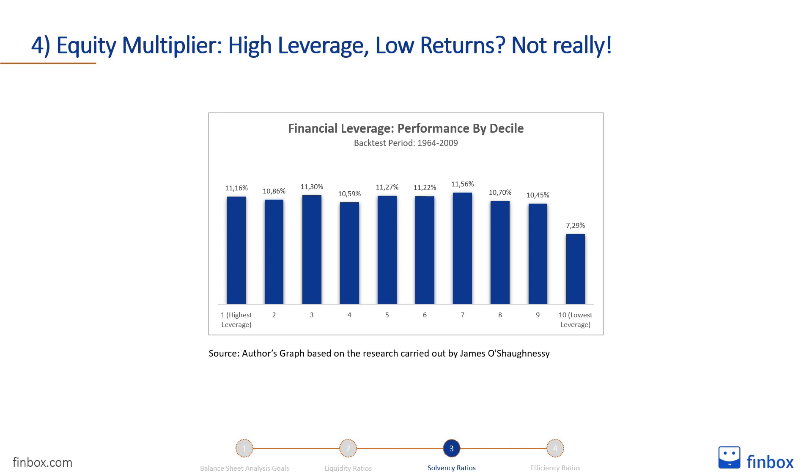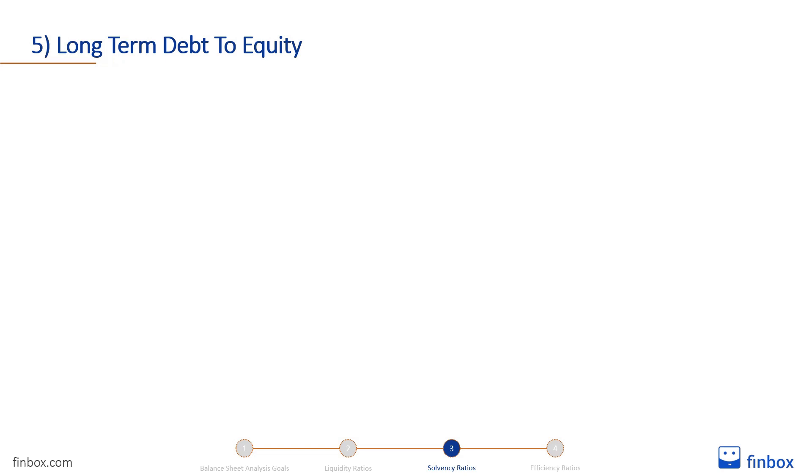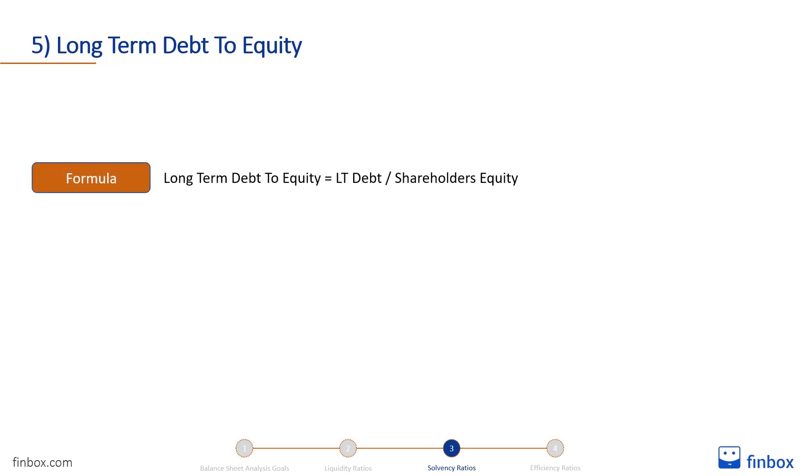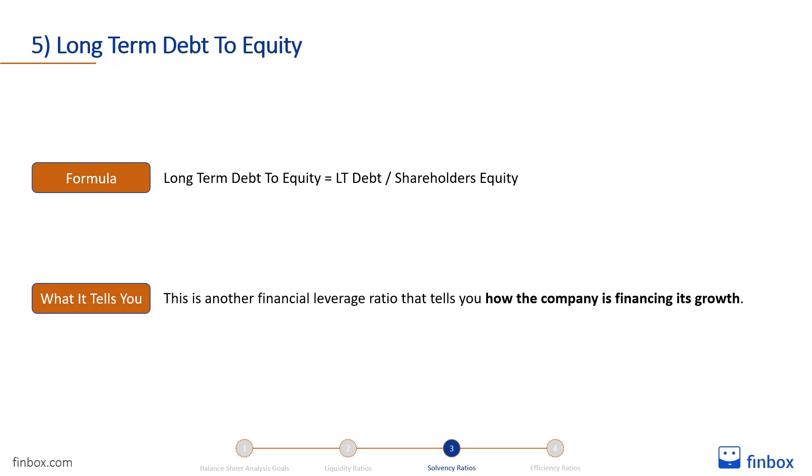Not surprisingly, the same research demonstrates that companies with low cash flow to total debt drastically underperform the market. In the 45-year backtest period between 1964 and 2009, stocks in the lowest decile for cash flow to total debt generated a 2.41% compounded annual return compared to the 11.22% compounded annual return of the overall market. If you don't want to underperform the market, you should definitely check which decile your stocks are in — you can do that with the Finbox Data Explorer, using the same process we used for the current ratio. Another financial leverage ratio that tells you how the company is financing its growth is the long-term debt to equity, equal to long-term debt divided by shareholders' equity. The same considerations made before also apply to this ratio.